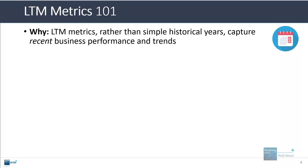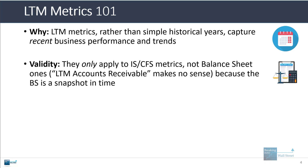The rationale is that LTM metrics, rather than simple historical fiscal years, tend to capture the most recent business performance and trends more accurately. Depending on how far along in the year you are, they could be quite different from the most recent fiscal year - once you get to Q2 and Q3, you will see bigger differences. Importantly, the LTM calculation only applies to income statement and cash flow statement metrics. You can't LTM a balance sheet metric - there's no such thing as LTM accounts receivable, because the balance sheet is a snapshot in time.